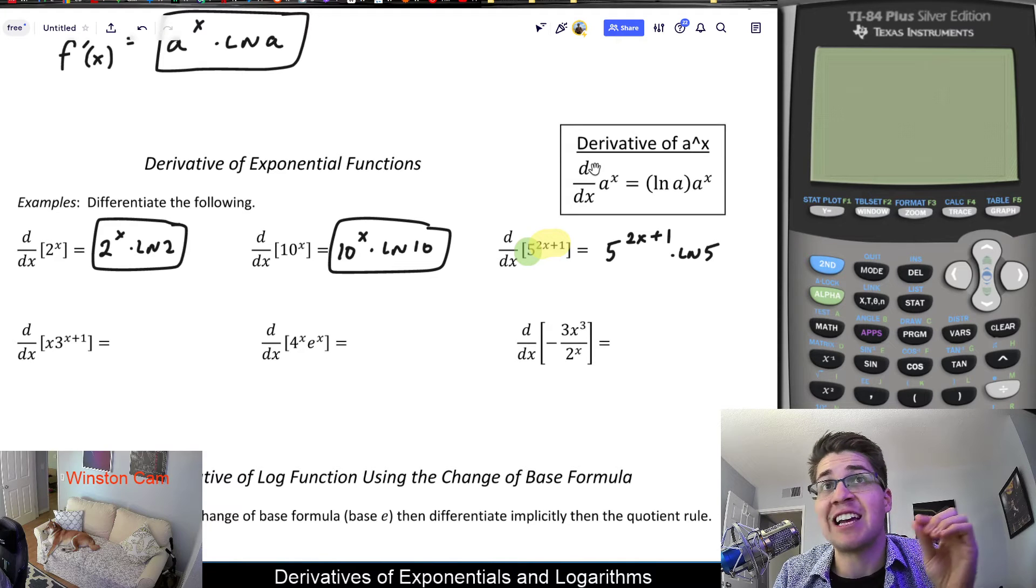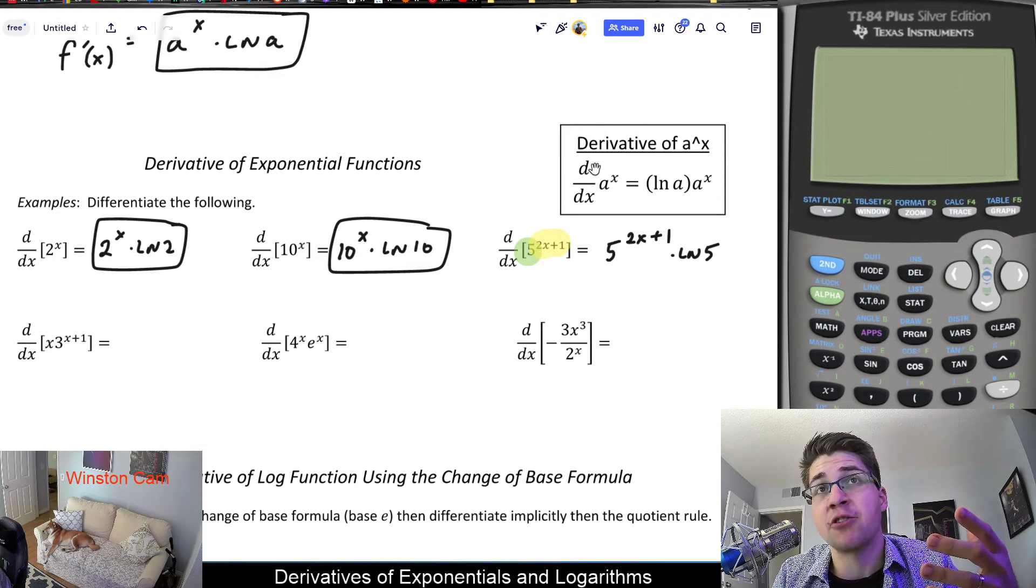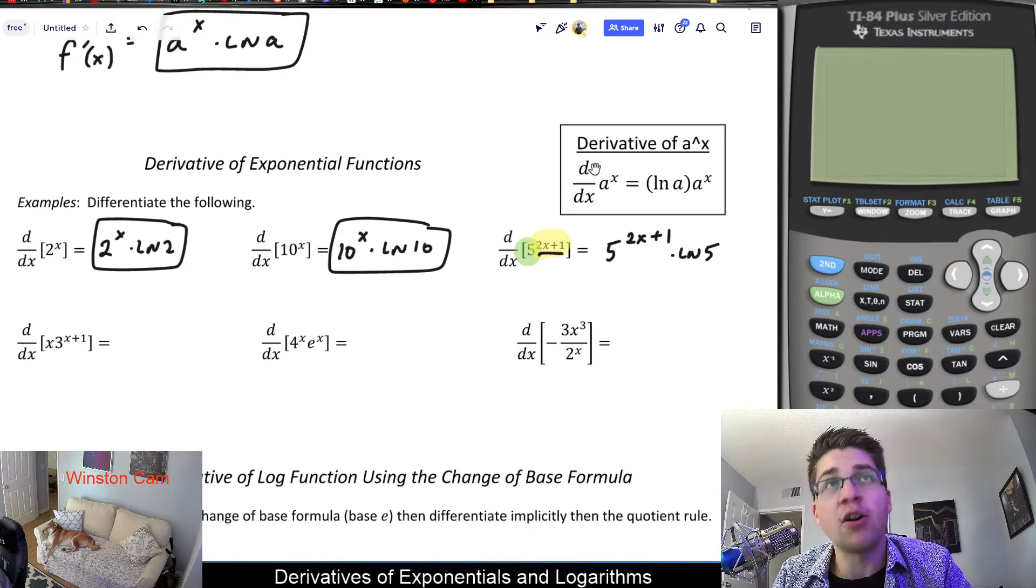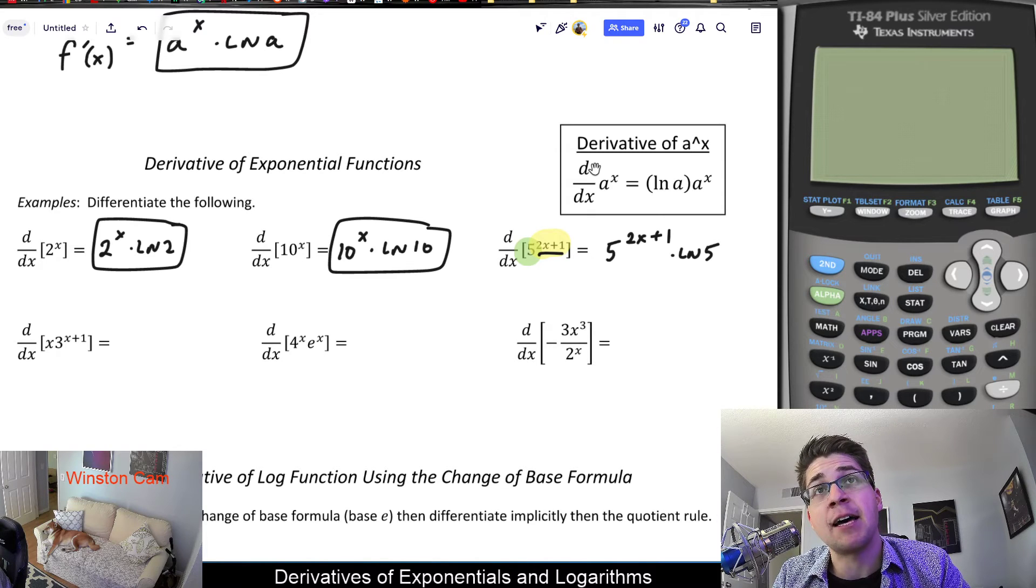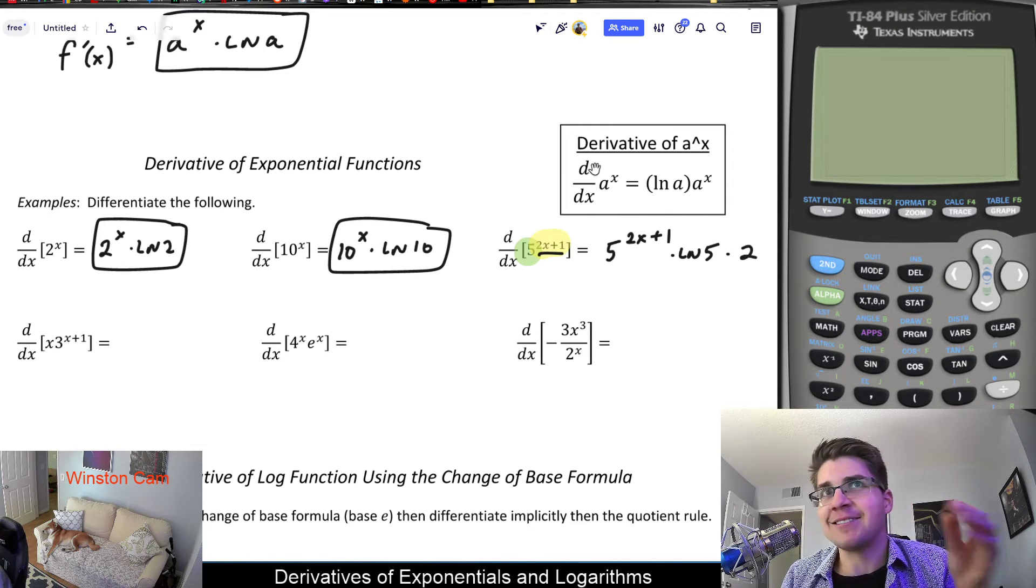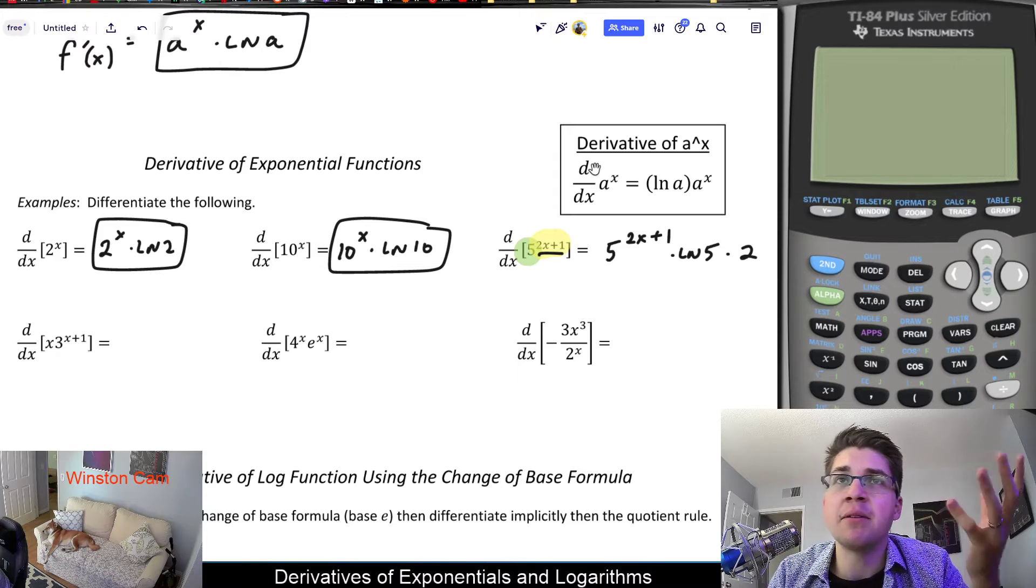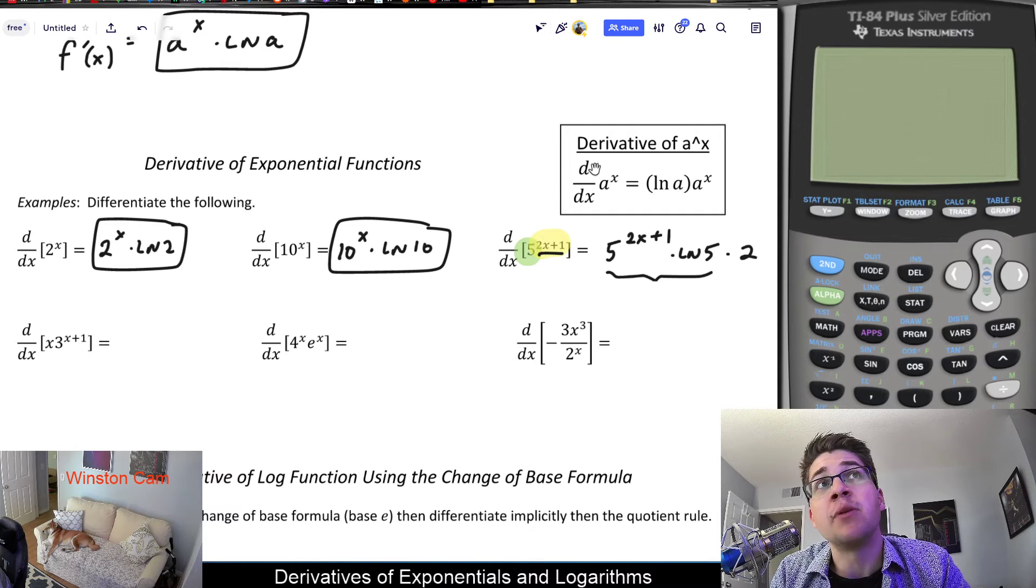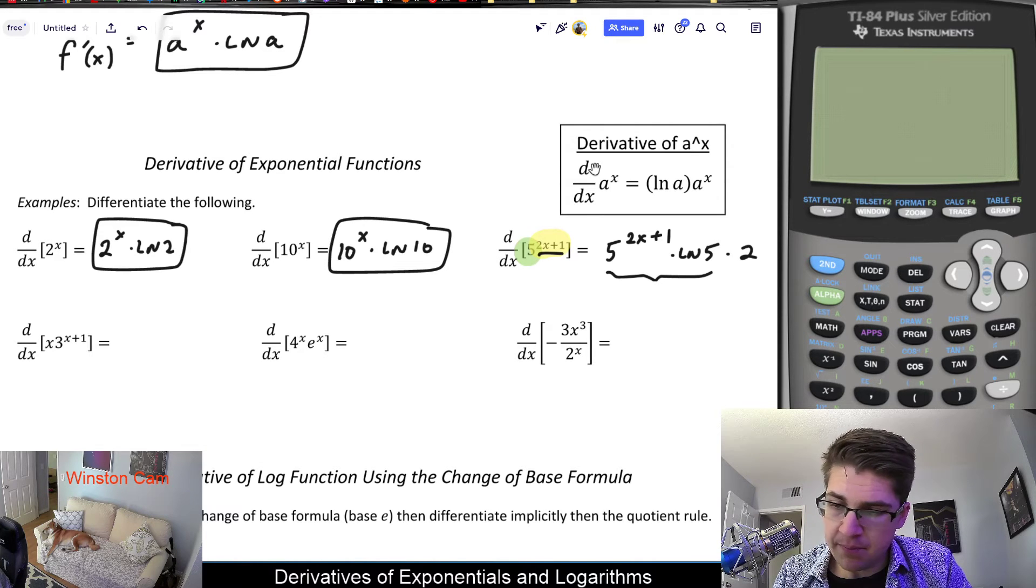And then we need that ln 5 because it was not base e. Whenever your exponential function has a base other than e, you have to multiply by the natural log of the base, which is, in essence, from the chain rule. But also, as we know from the chain rule, we have to also multiply by the derivative of the inside. And in this case, 2 to the x plus 1 is our inside function. The derivative of 2 to the x plus 1 is just 2. So we'd also need to multiply by 2. And it's kind of like we have to do the chain rule twice. Technically, it's not, but essentially, we're using the rule to do this part, leaving the inside alone and just applying the derivative of a to the x as a formula. And then we multiply by the derivative of the inside by chain rule right there.